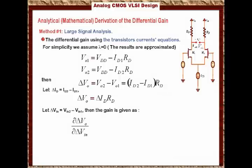And that will equal to ∂(ΔID) over ∂(ΔVN) times RD. All what I did here is I substituted for ΔVout to equal to ΔID times RD.